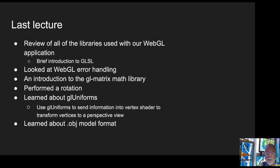In the last lecture, we looked at WebGL, the application. We did a brief introduction to GLSL. We looked at how to deal with error handling. We saw that it was fairly primitive. And I introduced you to the GL matrix math library, which does a lot of the stuff that we need to do. We also performed rotation and scale. We learned about another way of communicating with the GPU, which is GL uniforms, where we put data in a common place such that all of the shaders can access it. And we had a quick look at the .obj file model.